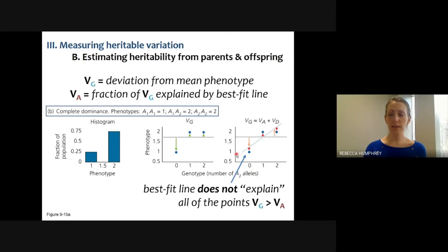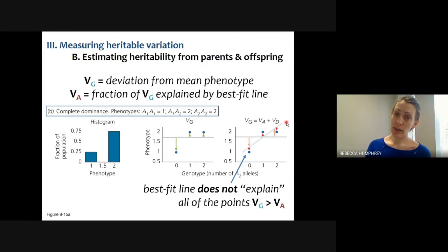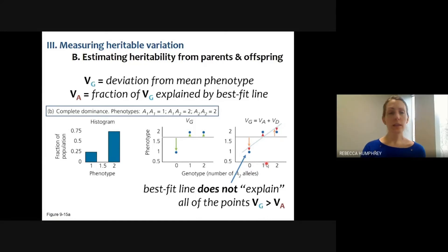The best fit line doesn't explain all of the points. Remember why we're talking about this: the best fit line is how we measure narrow sense heritability. What narrow sense heritability really measures is additive genetic variation — it's not measuring the variation among individuals due to dominance relationships. There's variation between individuals with genotype zero and genotype one that is not just due to the alleles they have, but also due to the interaction between those alleles. That's what dominance genetic variation is.